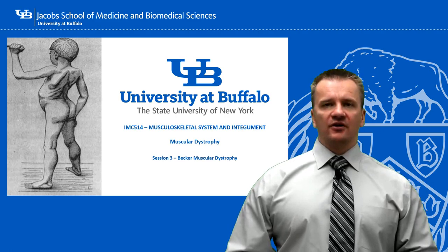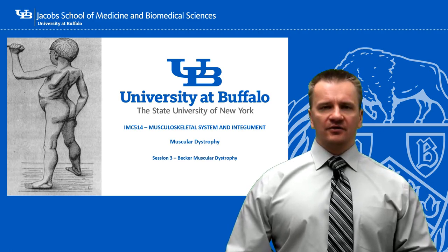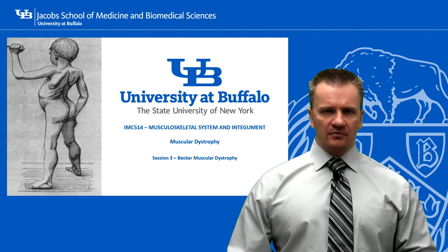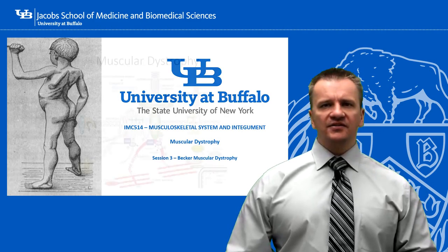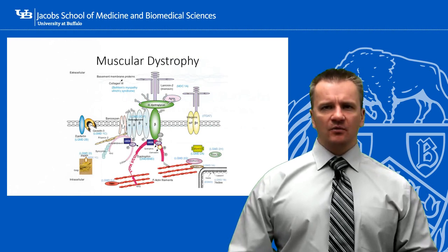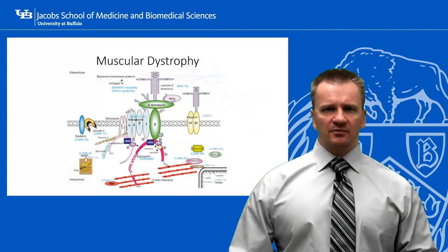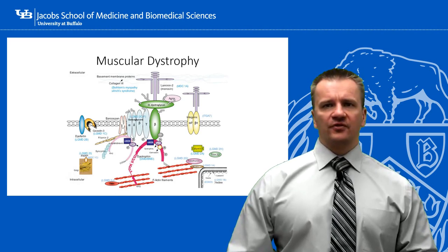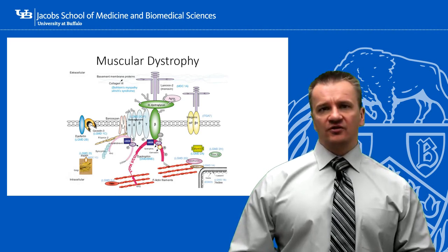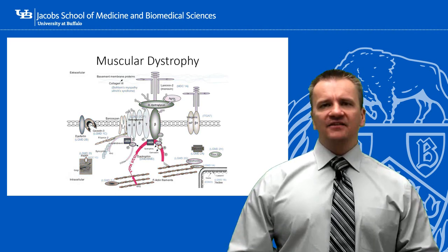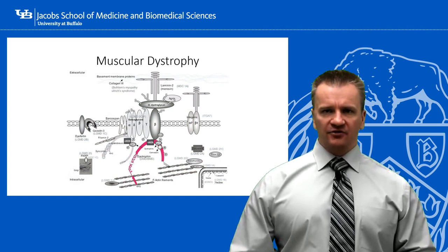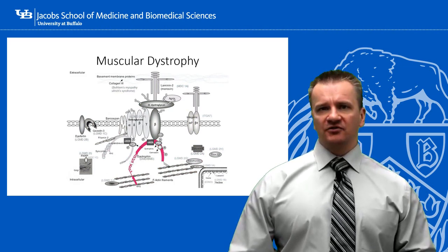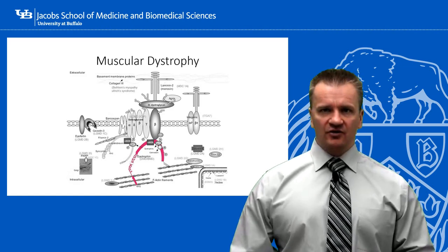Welcome to this third installment in our series on muscular dystrophies. In the previous segment, we discussed the most common and well understood of the muscular dystrophies, Duchenne muscular dystrophy, which results from mutation to the dystrophin gene. In this segment, we introduce you to Becker muscular dystrophy, a separate class of muscular dystrophy that also affects the dystrophin gene.